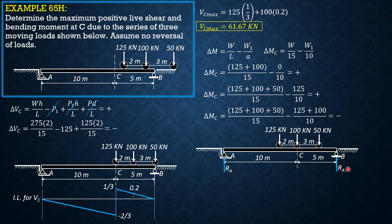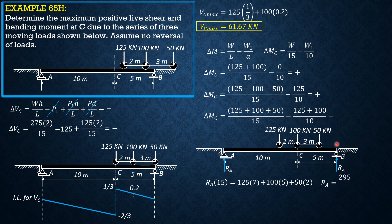Instead, I'll use statics. Sum of moments about B equals zero: Ra times 15 equals 125 times 7 (which is 2 plus 5), plus 100 times 5, plus 50 times 2. So Ra equals 295 over 3. The maximum moment at C is Ra times 10 minus 125 times 2, which gives Mc max.